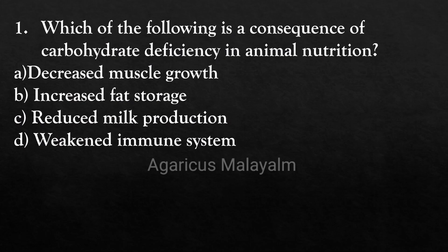Which of the following is a consequence of carbohydrate deficiency in animal nutrition? Answer options: option A, decreased muscle growth; option B, increased fat storage; option C, reduced milk production; option D, weakened immune system.